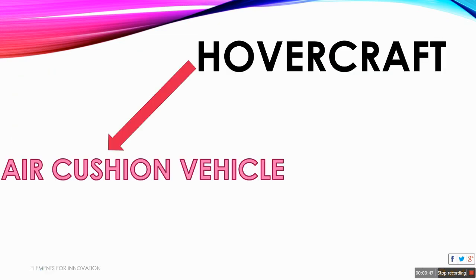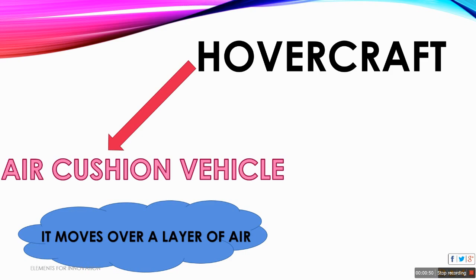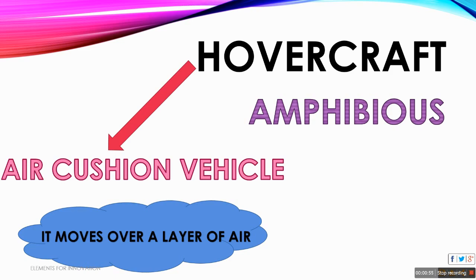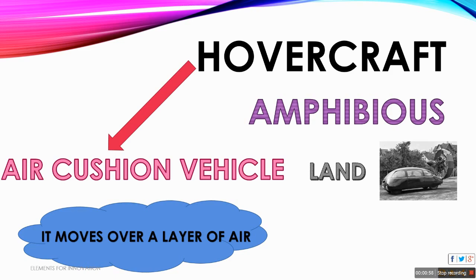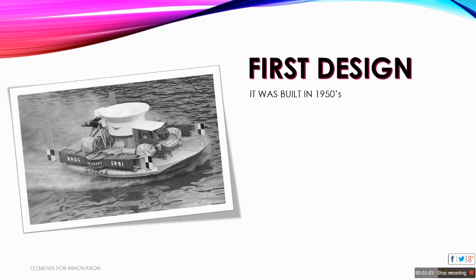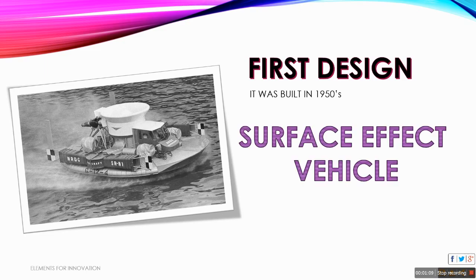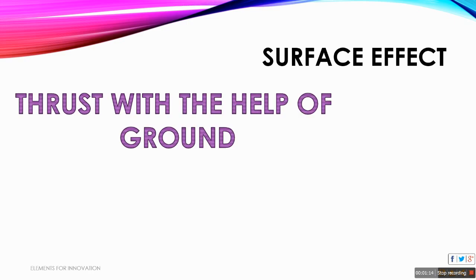A hovercraft is an air cushion vehicle — that means it is capable of moving over a layer of air. It is also an amphibious vehicle, capable of moving over land and water. The first design of the hovercraft was designed in the 1950s and at that time it was called a surface effect vehicle. Surface effect is a type of effect that helps the hovercraft move at a certain height from the ground due to the thrust which is generated with the help of the ground.